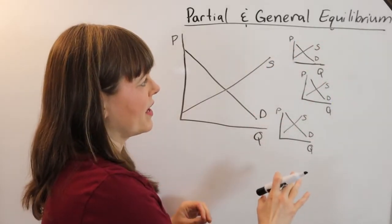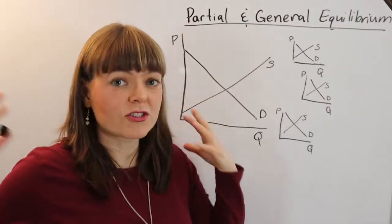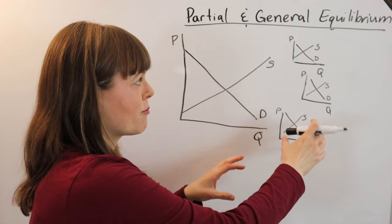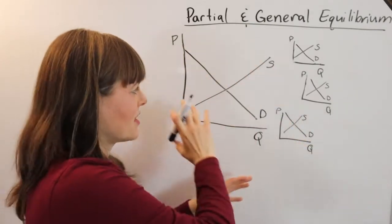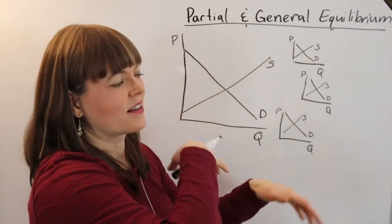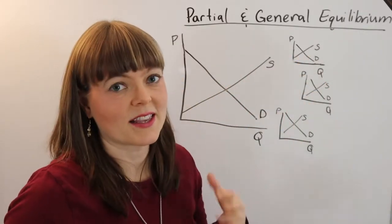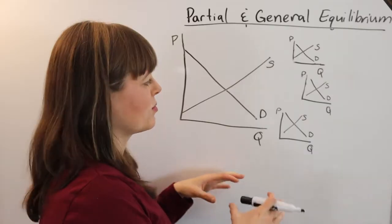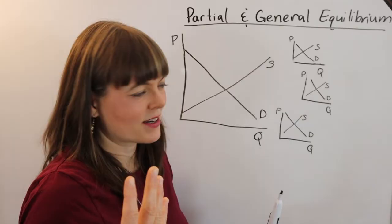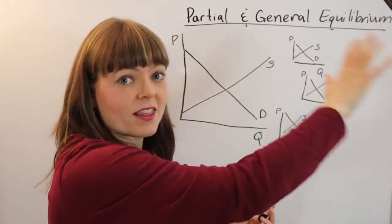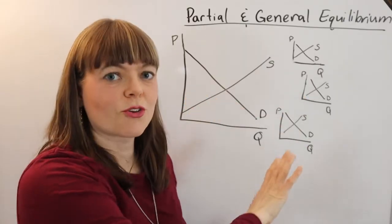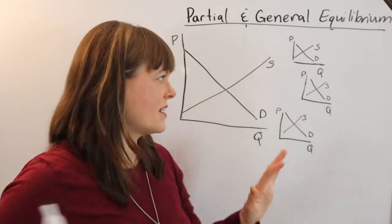General equilibrium is the broader long-run effects of all the markets related to that market as these markets adjust in response. One market adjusting might cause another market to adjust, and this whole process may take years because you may have new industries popping up as a result of this particular demand shift. In the long run, once everything has adjusted in response to the one thing, that's general equilibrium.